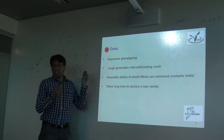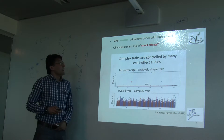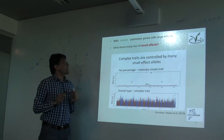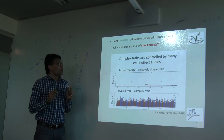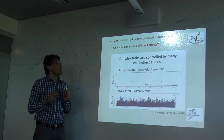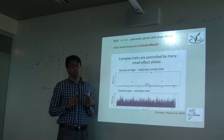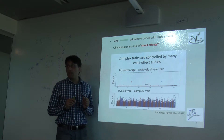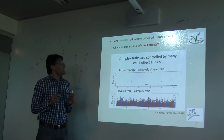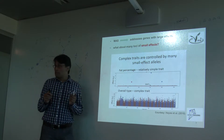Now we come to molecular breeding, which is marker-assisted selection. It is used in plant breeding, but it addresses only genes with large effects. So the question is: what about many loci with small effects?